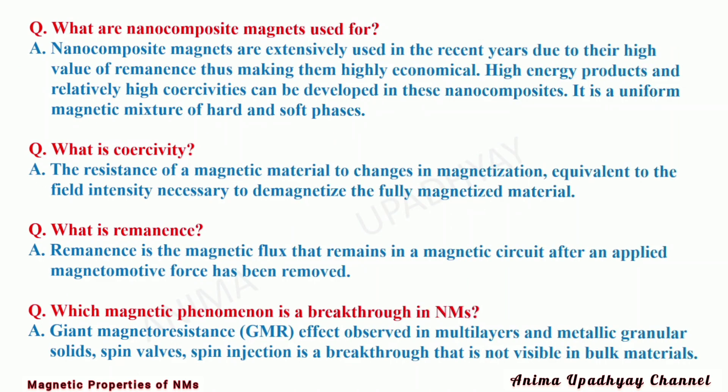What are nanocomposite magnets used for? Nanocomposite magnets are extensively used in recent years due to their high value of remanence, making them highly economical. High energy products and relatively high coercivities can be developed in these nanocomposites. They are a uniform magnetic mixture of hard and soft phases.